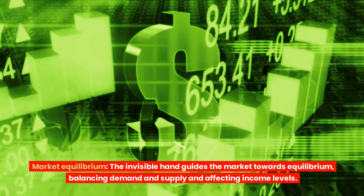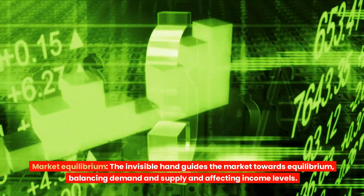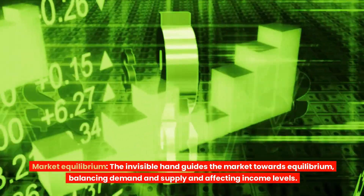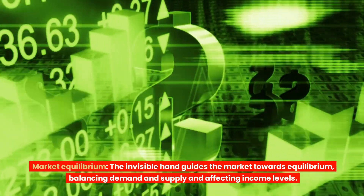Market equilibrium. The invisible hand guides the market towards equilibrium, balancing demand and supply and affecting income levels.